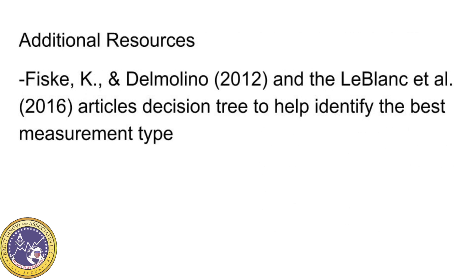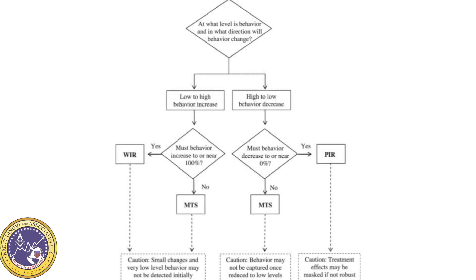For additional resources, review the Fisk and Del Molino article as well as the LeBlanc article — they each feature a decision tree to help identify the best measurement type. In the Fisk and Del Molino article, the decision tree poses various questions to help a clinician identify the best type of data collection system — for example, questions such as 'behavior must increase to near 100%' or 'the behavior must decrease to near 0%.' Based on the response, whether yes or no, the most appropriate data collection system can be identified, whether that be partial interval recording, whole interval recording, or a momentary time sample. There are also different cautions for each one that the clinician can use to guide and inform their decision making.